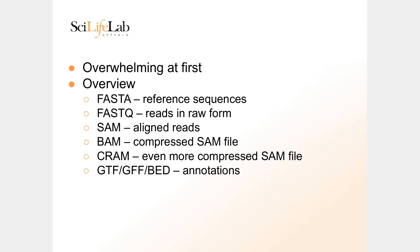FASTA is for reference sequences, like a reference genome. Then you have FASTQ, which is reads in raw format. Then you have SAM and BAM files — those are always aligned reads. Then you have CRAM, which is pretty much the same as SAM and BAM, also aligned, but smaller. And then you have different annotation formats, like GFF and BED formats.